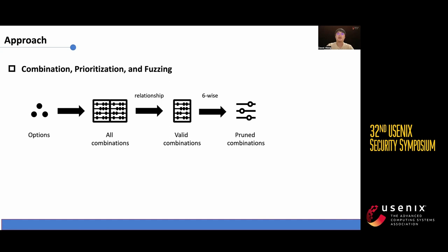Next, we apply the six-wise method to further prune the number of combinations and sort them based on the coverage. Finally, we pass the pruned combinations along with the seed files to our fuzzer for fuzzing.